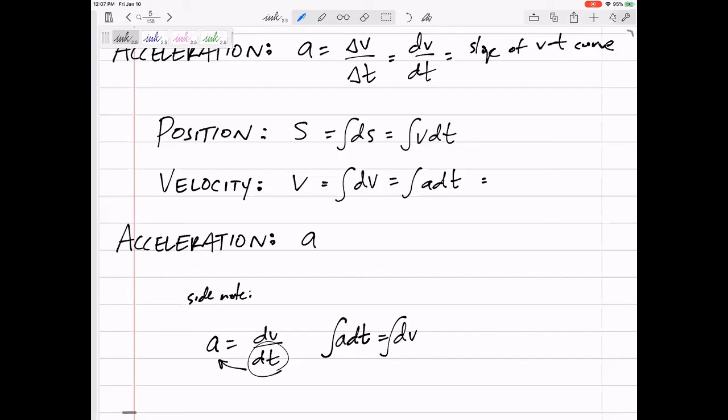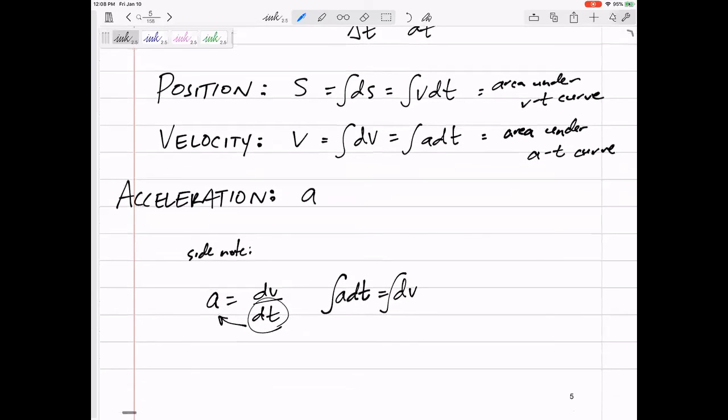And similarly, we would say the integral of DS is the integral of V DT. The integral is not the slope of a line. What is the integral? The area under the curve. Area under the curve. So if we were to plot the acceleration plot, the area under would be the velocity. Area under VT curve.